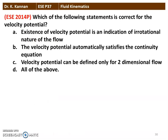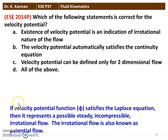The next question from the 2014 question paper: which statement is correct for the velocity potential? The existence of velocity potential indicates the irrotational nature of the flow. If velocity potential phi satisfies the Laplace equation, it represents possible steady incompressible irrotational flow, also known as potential flow. The correct answer is that the existence of velocity potential is an indication of the irrotational nature of the flow.